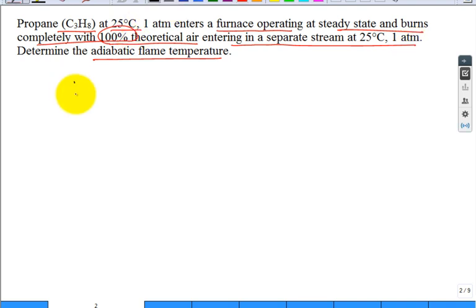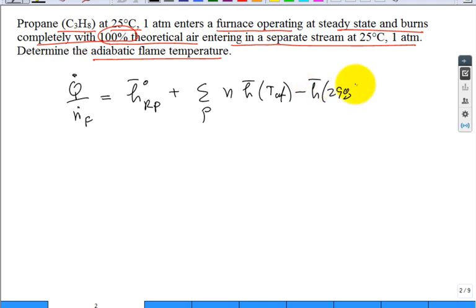Well, our equation would be our Q dot divided by N dot of the fuel. Well, we desire that to be zero and then the sum over the products, the stoichiometric coefficient and then the enthalpy at the adiabatic flame minus the enthalpy at 298 for each of those products.